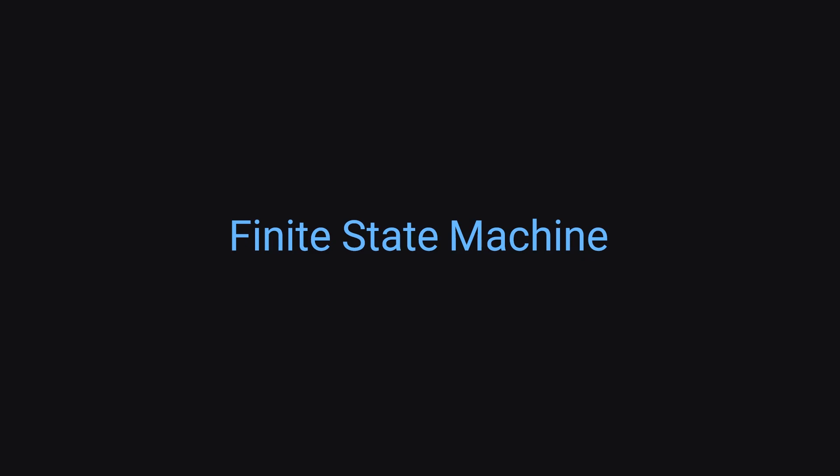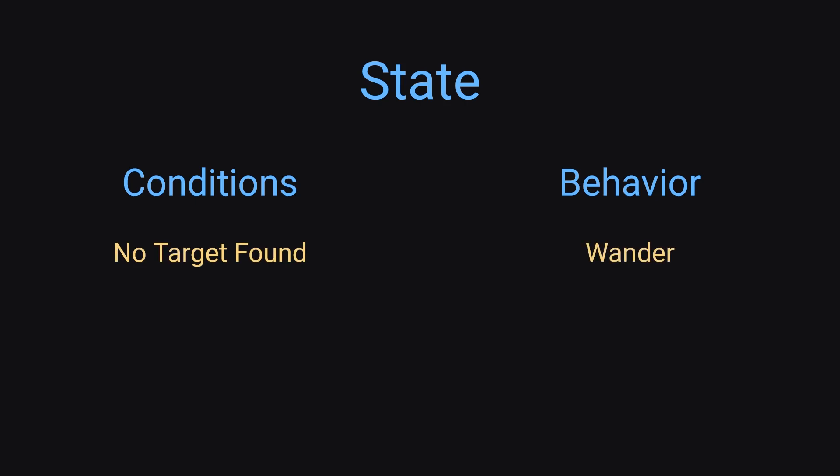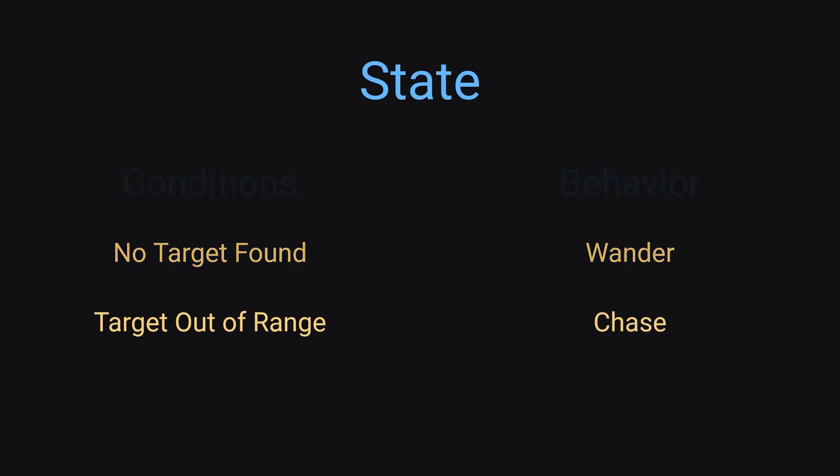Even though this is a smaller example, I personally would use a finite state machine. Before we define a finite state machine, we should probably define what a state is. A state is a set of conditions and a behavior to go along with it. So our wander state had the condition that there was no target, and the behavior is to wander randomly. Our chase state had the condition that we have a target and are not in range, and the behavior is to chase.